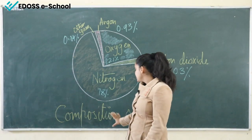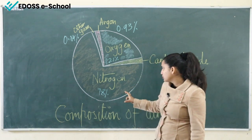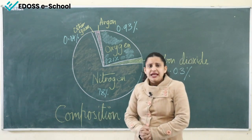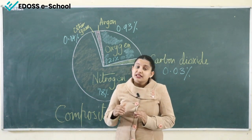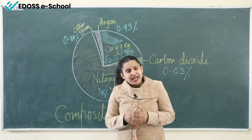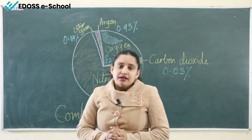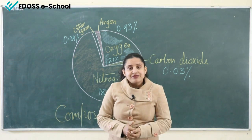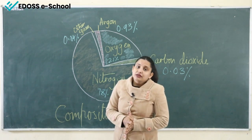Now we will learn the composition of air. In our atmosphere, the gas which is in bulk is nitrogen, that is 78%. When we inhale, we take some amount of nitrogen but we exhale it. Plants need nitrogen for their survival, but they cannot take nitrogen directly from the air. There is a bacteria called rhizobium — it lives in the soil and roots of the plant and converts nitrogen into the form required by the plants.